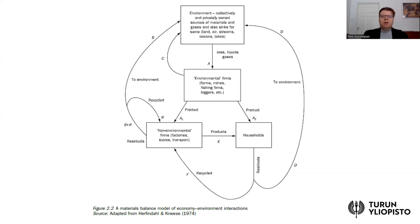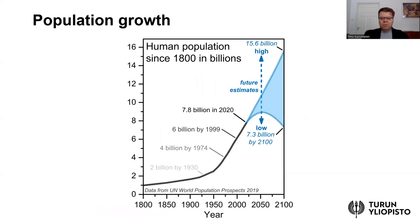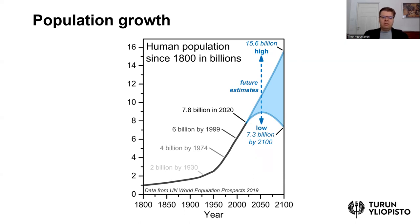A big source of environmental problems is that the economy has grown in volume, which is very much related to population growth. I took this recent United Nations world population prospect from 2019. The human population reached 7.8 billion in 2020. As you can see from the diagram, population growth has been really fast, at least since the 1950s. This additional population means more economic activity, which puts a greater burden on the natural environment. Definitely, population growth is the underlying source of many different types of environmental issues and challenges we face today.